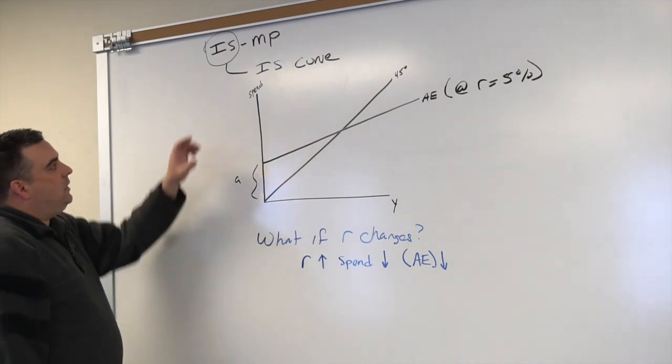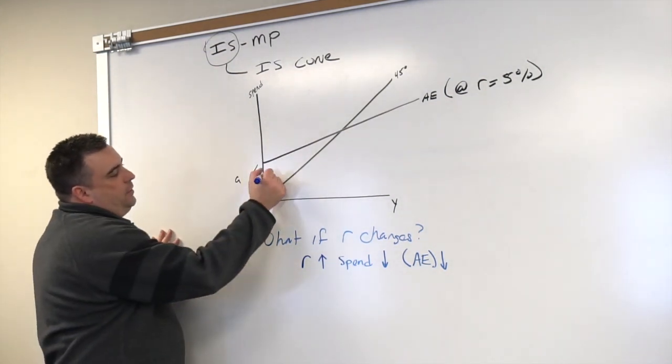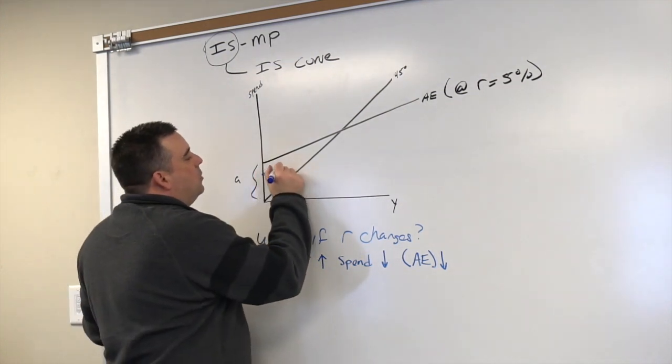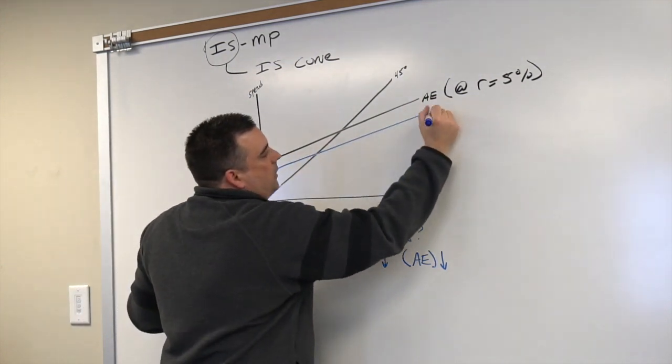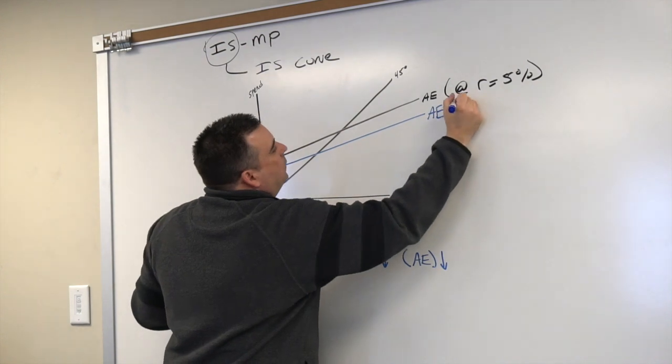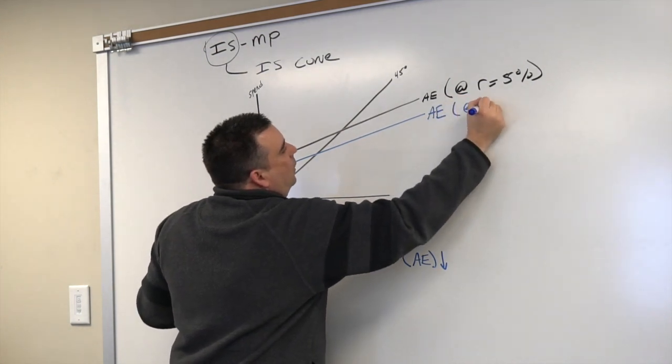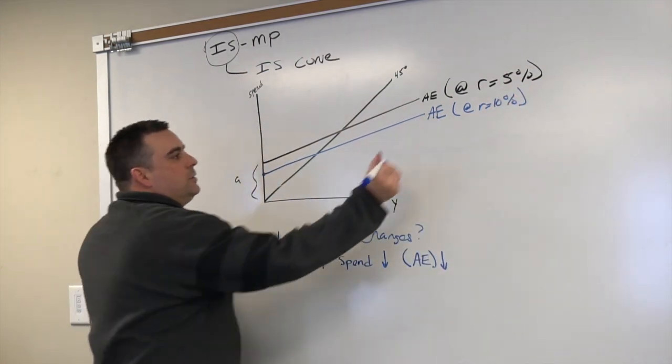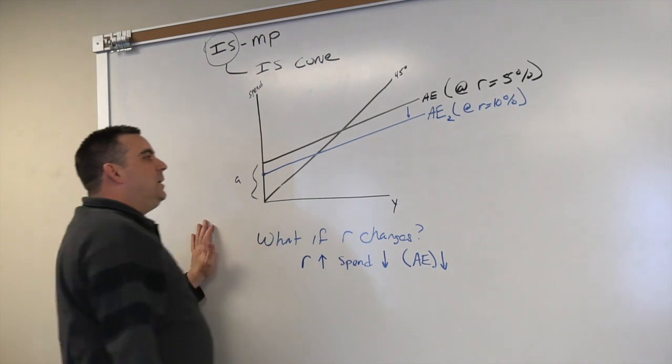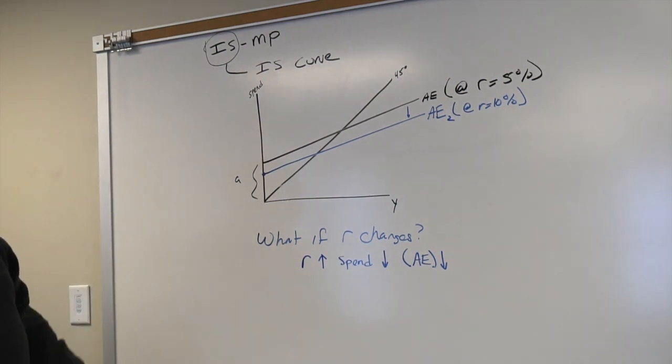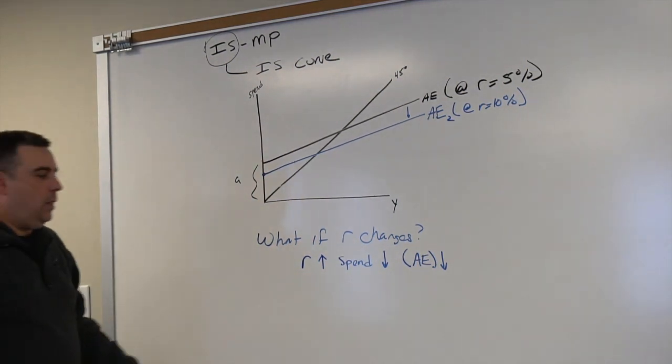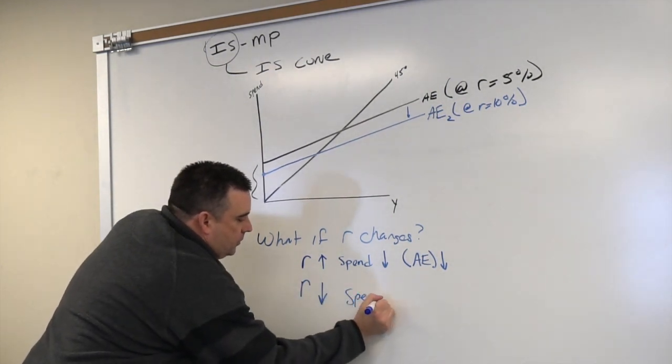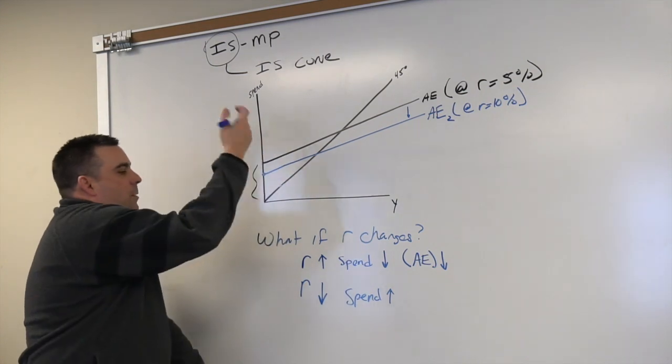Since aggregate expenditure is a curve representing spending, we expect aggregate expenditure to go down. R up, spending down. So I go to a lower point on this spending axis and I would have some new aggregate expenditure function at R equals 10%. So AE2, less spending because of the higher interest rate. All of this works in reverse as well, so if R goes down, spending would go up, it would start us at some higher point, and aggregate expenditure would go up.